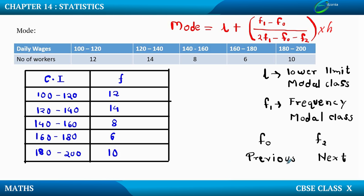The first step is to find out which is the highest frequency. 14 is the highest frequency amongst all, so the class 120–140 is considered our modal class. The lower limit L is 120. F1 is 14, F0 (preceding frequency) is 12, F2 (succeeding frequency) is 8, and class size H is 20.